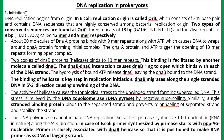The first stage of DNA replication in prokaryotes is initiation. DNA replication begins from the origin, and for prokaryotic organisms that origin site is called ori-c. It consists of 245 base pairs and contains DNA sequences that are highly conserved among bacterial replication origins. Two types of conserved sequences are found at ori-c: three repeats of 13 base pairs and four or five repeats of 9 base pairs, called 13-mer and 9-mer respectively.